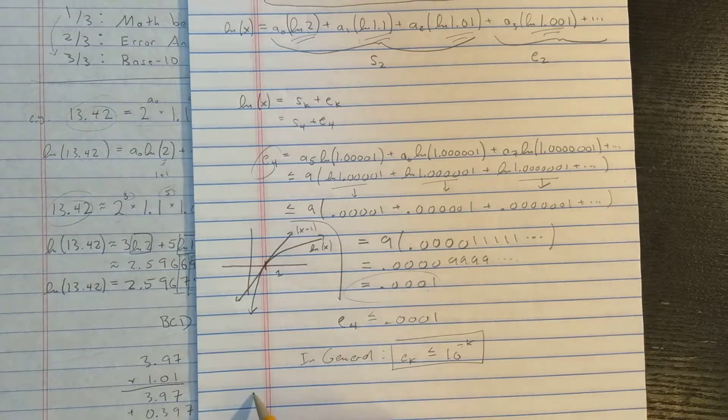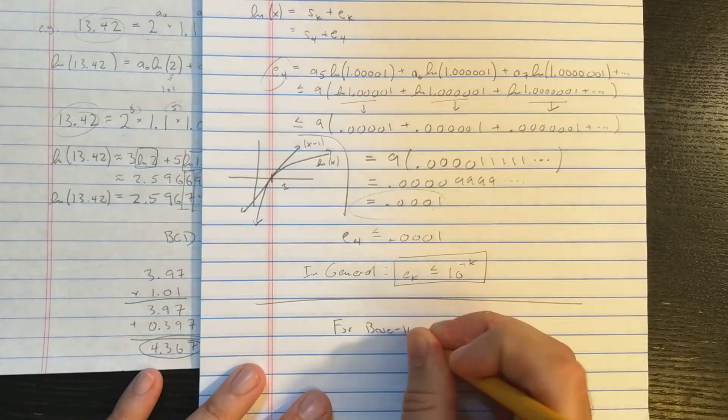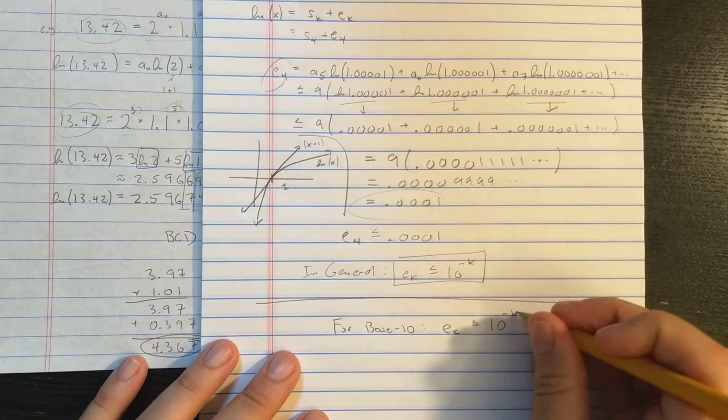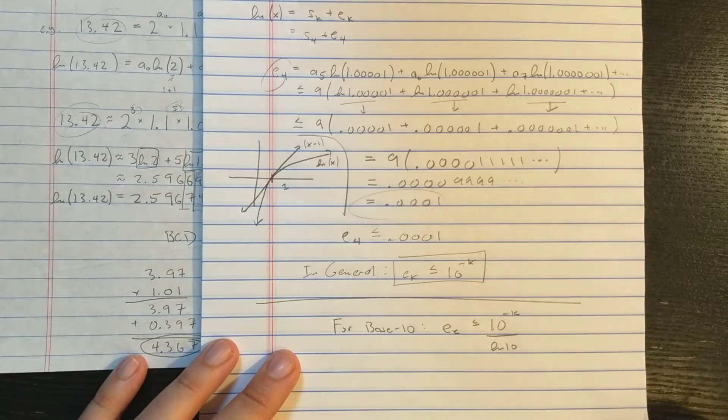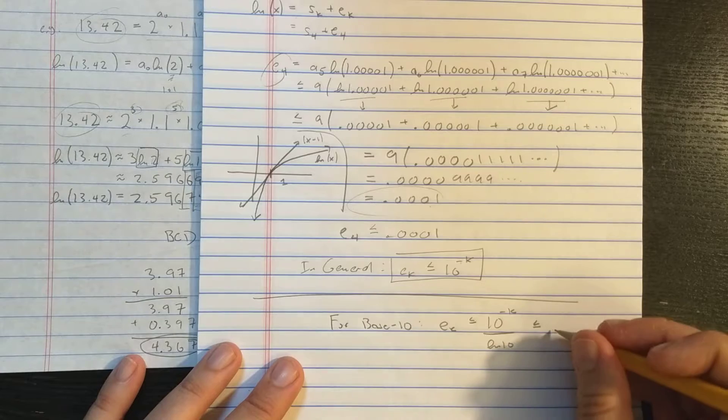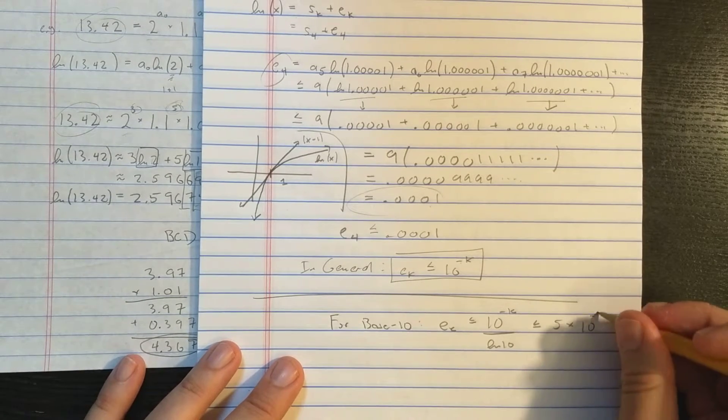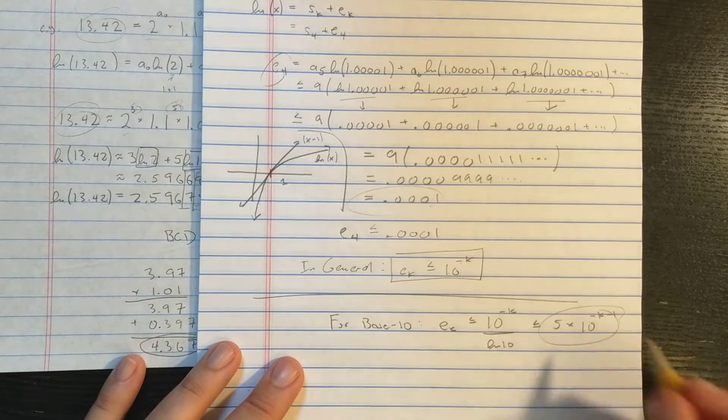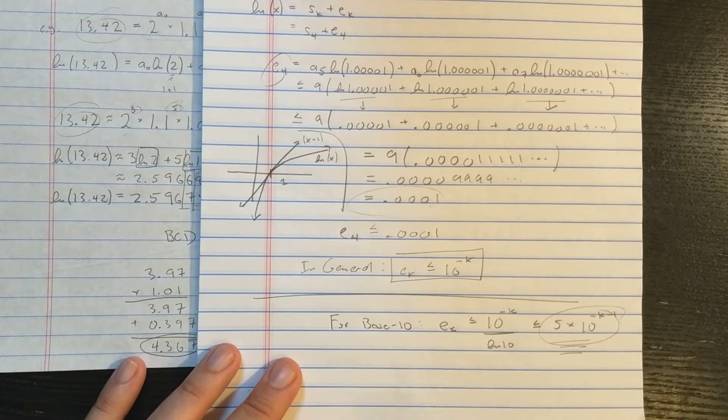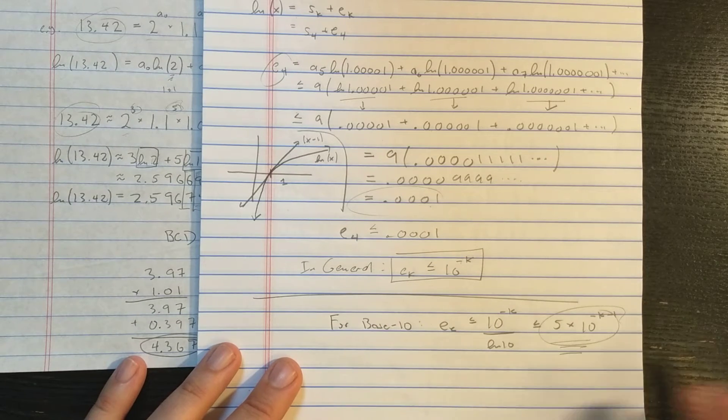So if you do this for base 10 log, you'll get EK less or equal 10 to the minus K divided by natural log 10. And natural log 10 is about 2.3, so this is less or equal 5 times 10 to the minus K minus 1, which is often how you want to bound your error. So for base 10, it's very nice. The error is actually less than for natural log. That's because the base 10 log is smaller.